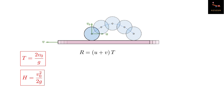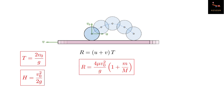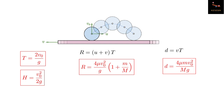Now think carefully. Relative to the plank, the horizontal velocity of the center of the ball is going to be U plus V, and therefore the horizontal range of the ball relative to the plank is R equals (U plus V) into T. Substituting the values of U, V, and T, you will get R as 4·mu·v0² divided by g times (1 plus small m by capital M). This is exactly the distance between the two impact points on the plank — not the range of the ball relative to earth. In this time, the plank moves back by a distance d which is v into T, giving d equals 4·mu·m·v0² divided by capital M·g.